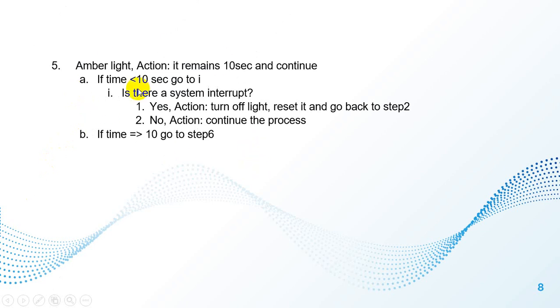In each state, as I mentioned before, the timer is checked. And also when the interrupt is checked, when we have an interrupt, go to reset and go back to the first step. And if we don't have an interrupt, the traffic light can continue.